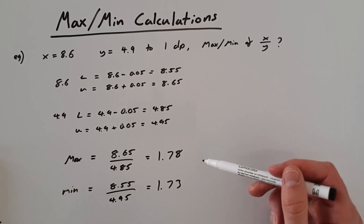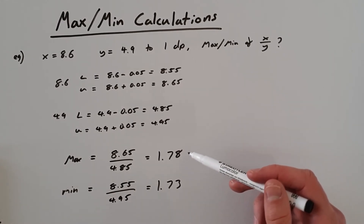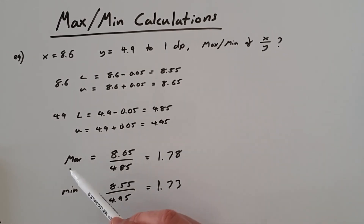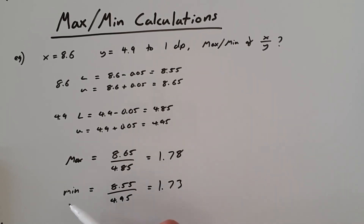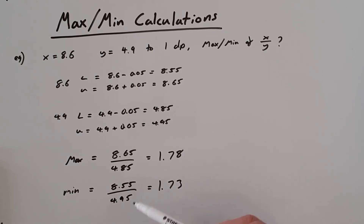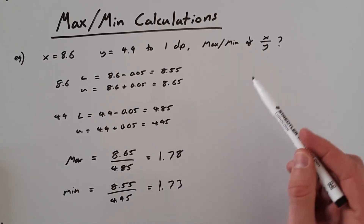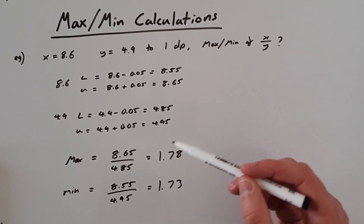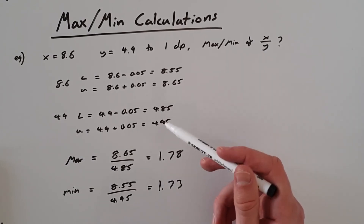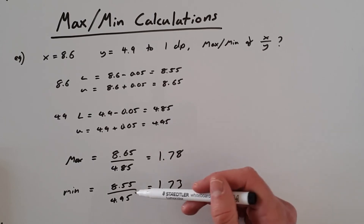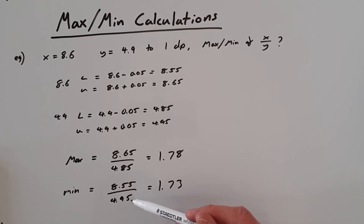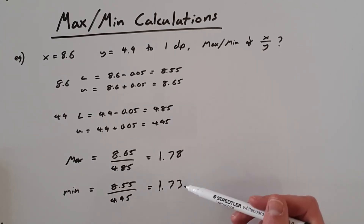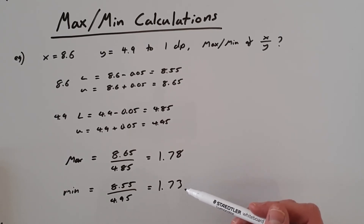Calculating 8.55 divided by 4.95 gives us approximately 1.73 to two decimal places. A quick sanity check: if our maximum number is bigger than our minimum number, we know we're in the right place. If you're unsure about reversing the denominator, you can try using other numbers and you'll find that taking a lower number in the denominator gives you a higher result.